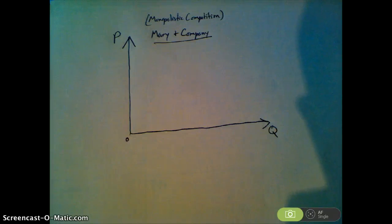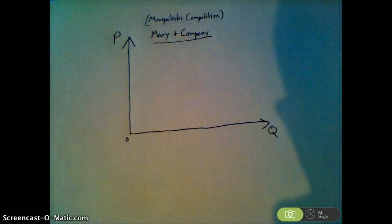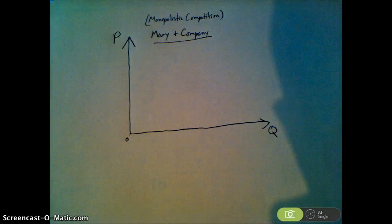In this question, we're doing a sample monopolistic competition question from Mary and Company, which is operating and producing a cleaning product called BrightClean. The company currently produces the profit-maximizing quantity, but is operating at a loss.